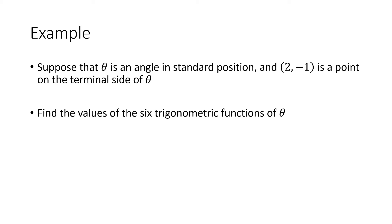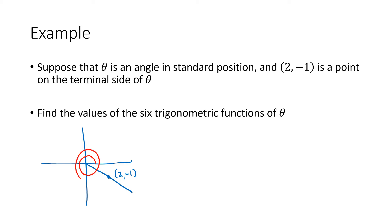Let's look at an example. Suppose we have an angle in standard position and (2, −1) is a point on the terminal side of theta. The picture here shows that (2, −1) is down in the fourth quadrant, so that is the terminal side of the angle. We don't really know which specific angle this is, but that's all we need to know to figure out the six trigonometric functions.